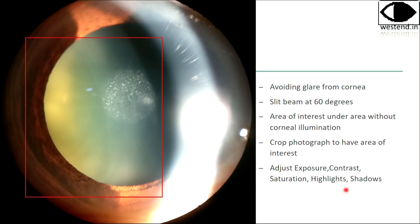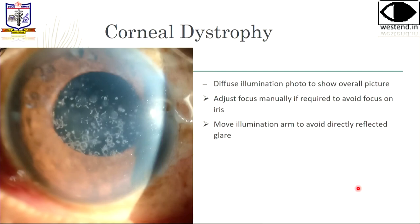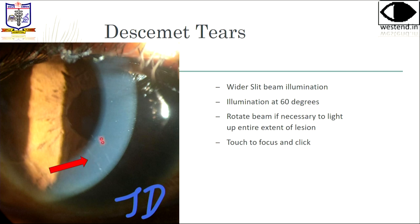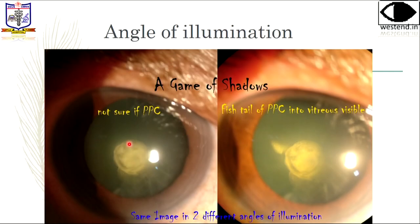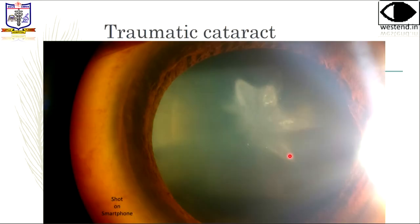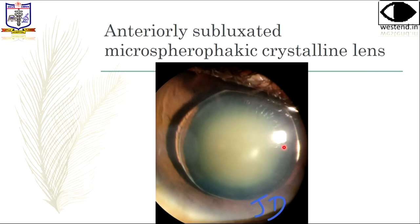Adjust the exposure, contrast, saturation, highlights, and shadows in post. Pro tip: increase the saturation a bit — the photos will look beautiful and very colorful. For corneal dystrophy, make sure the light is at an angle — don't take a straight-on light; move the illumination so the glare is out of the way. For Descemet's tears, take at a parallelepiped, keep it slanting, and try to have a dark background by keeping the slit at a wide angle. Lighting is very important — for a PPC, just adjusting the light a little lets you see the fishtail into the vitreous. This shows the importance of lighting for traumatic cataract and anteriorly subluxated crystalline lens images as well.